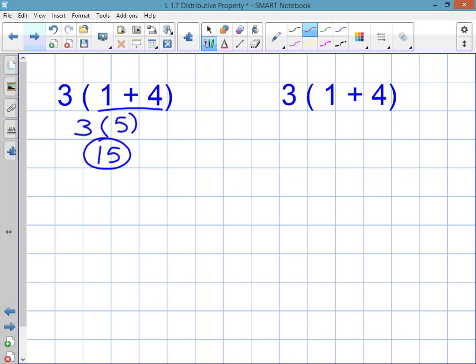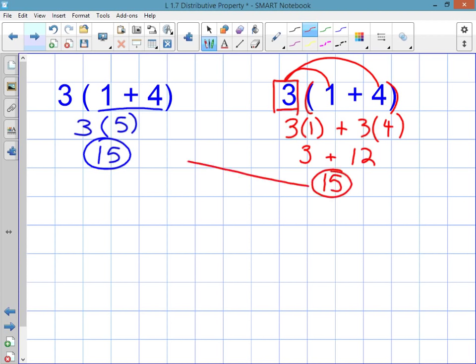You might also notice that there's a 3 on the outside of a set of parentheses, and this indicates that you're going to use the distributive property. This property just means that you're going to distribute this 3, or give it, to each part inside. So you're going to distribute it to the 1 and then to the 4. And when you distribute, you're multiplying. So it's 3 times 1 plus 3 times 4. 3 times 1 is 3, plus 3 times 4 is 12. 3 plus 12 is 15. Same answer.